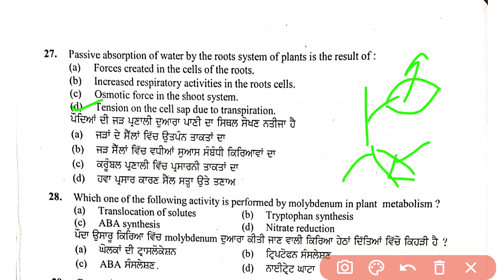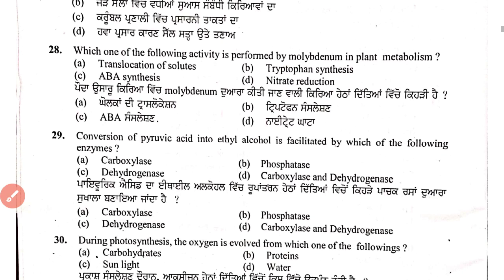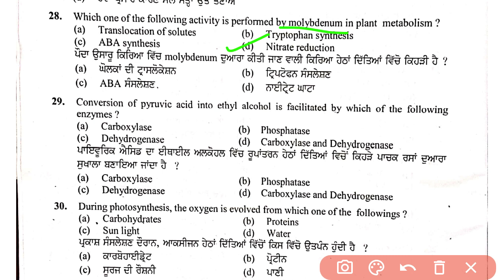Question 28: which activity in plant metabolism is performed by molybdenum? The role of molybdenum in plants is in nitrate reduction. So nitrate reduction is associated with the element molybdenum.